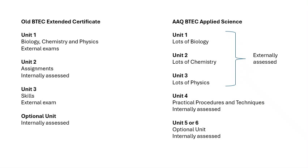The new AAQ is very different. Unit 1 is lots of biology, Unit 2 is lots of chemistry, and Unit 3 is lots of physics. I think the AAQ is harder — to justify being equivalent to A-levels and the same UCAS points, they've made it more rigorous. Units 1, 2, and 3 are all externally assessed exams in the hall.